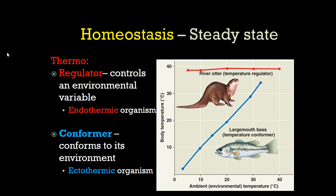A large mouth bass in Lake Washington is a thermoconformer — cold-blooded, or ectothermic. The environment controls their temperature. When it's cold, their metabolism decreases and they're not hungry, which is why fishing is bad in winter. But in summer, they're warmed up, their cells need energy, and they're hungry. Bass fishing stinks in winter because their metabolism drops, but otters are always hungry because no matter the water temperature, they're using a huge percentage of their diet to maintain their internal temperature — they're endothermic, warm-blooded creatures.